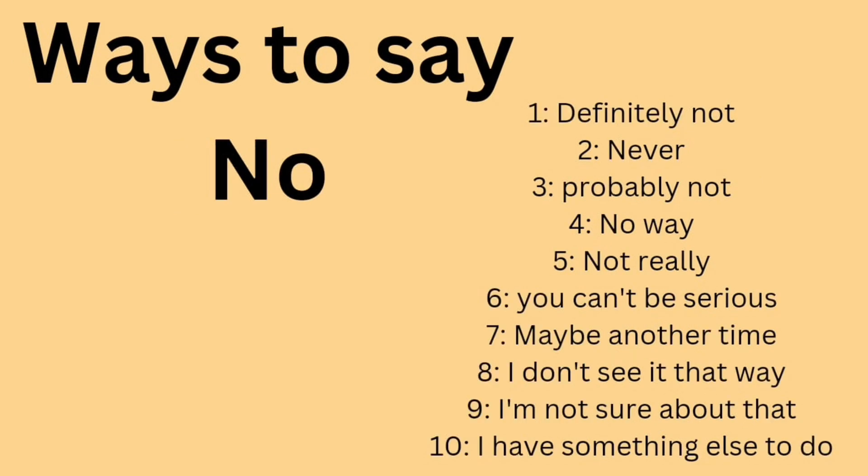Ways to say no: number one — definitely not, number two — never, number three — probably not, number four — no way, number five — not really, number six — you can't be serious, number seven — maybe another time, number eight — I don't see it that way, number nine — I'm not sure about that, number ten — I have something else to do. For example, if asked 'Can you come to the party tonight?' you could say: not really, maybe another time, I'm not sure about that, or I have something else to do.